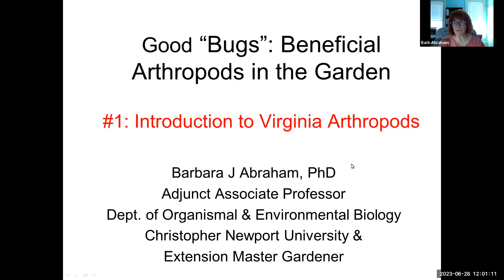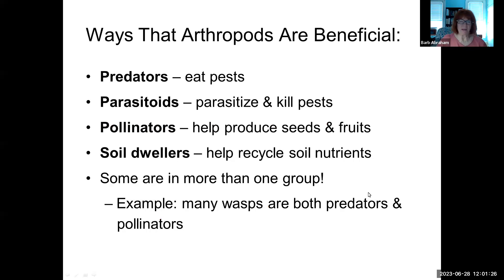Some of you, I see some familiar faces. Some of you may have heard me carry on about good bugs previously, so hopefully there'll be something new in this presentation for you. This is a quick overview of everything we're going to cover in the five sessions: predators, parasitoids, pollinators, and soil dwellers. The last presentation, at the end of July, will be on applying some of this stuff to gardens specifically.